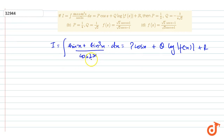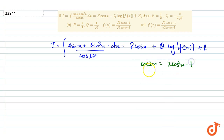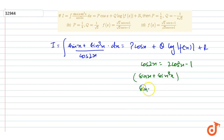First of all, we have to do some changes. We can write cos 2x as 2 cos squared x minus 1. In the numerator, we are having sine x plus sine cube x, and if we take sine x common from here, we would have in the bracket 1 plus sine squared x.